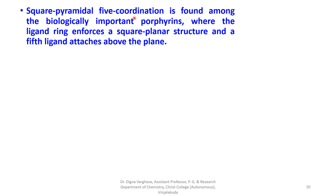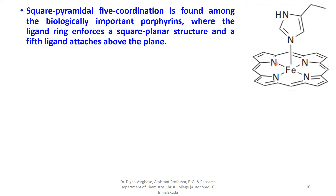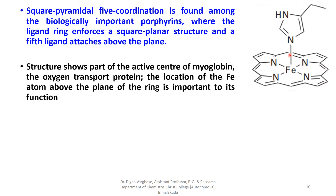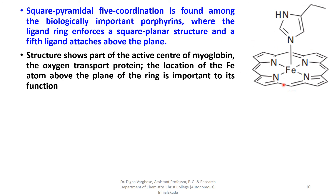Square pyramidal five-coordination is found among biologically important porphyrin rings, where the ligand ring enforces a square planar structure and a fifth ligand attaches above the plane. The four nitrogen atoms of the porphyrin ring system attach to the iron atom in four-coordinate fashion, with a histidine nitrogen above the plane forming square pyramidal coordination. This structure shows part of the active center of myoglobin, the oxygen storage protein, where the location of the iron atom above the plane of the ring is important to its function.